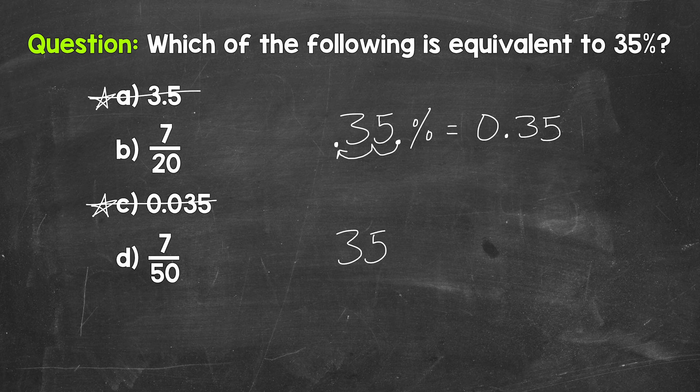So 35% equals... when writing a percent as a fraction, all we need to do is put it over 100. Remember, percent means per 100. So we put 35 over 100, and that's our fraction.